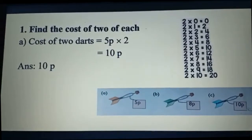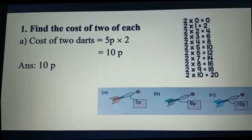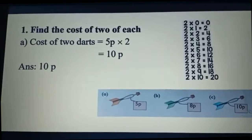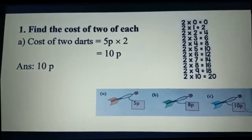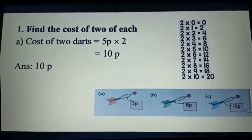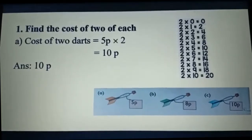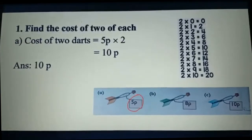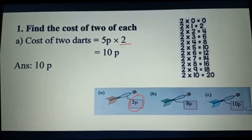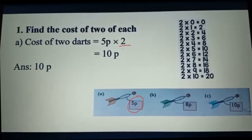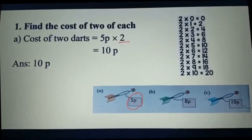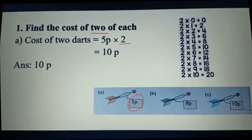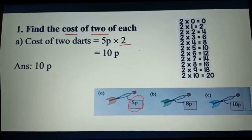I'll solve problem number A for you, but you have to write B and C by yourself. Number A: cost of two darts equals five pence multiplied by two, because we have to find the cost of two darts.